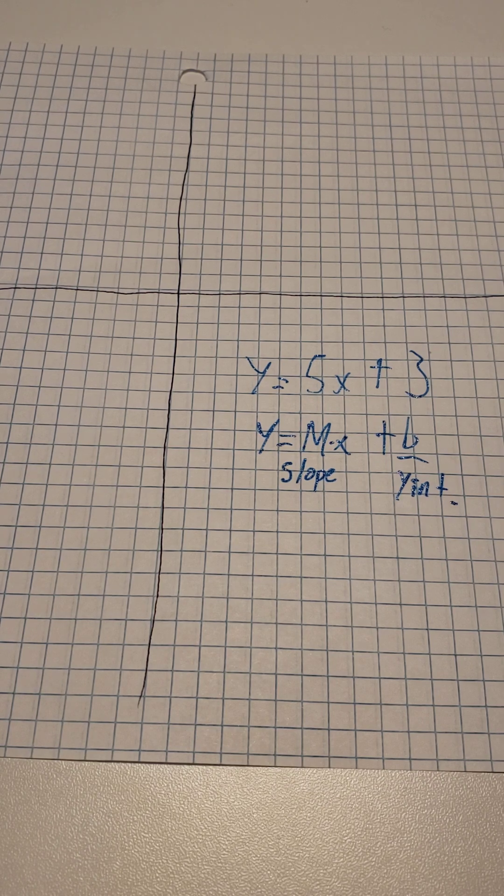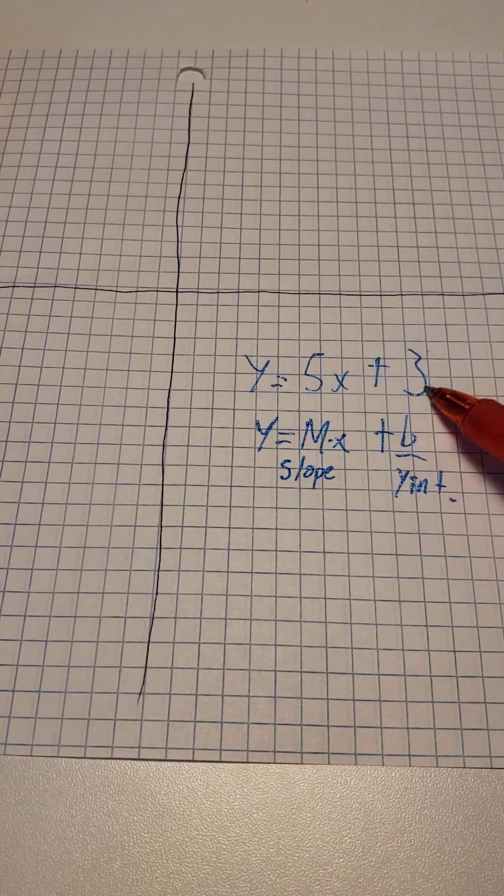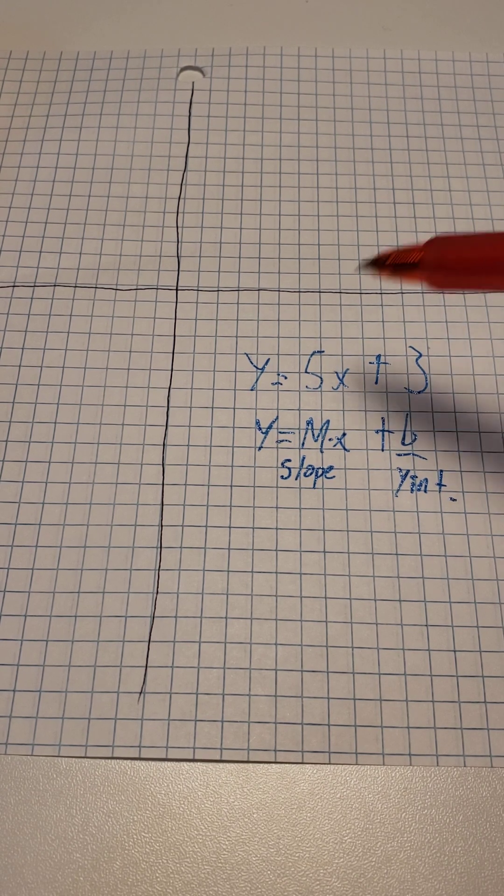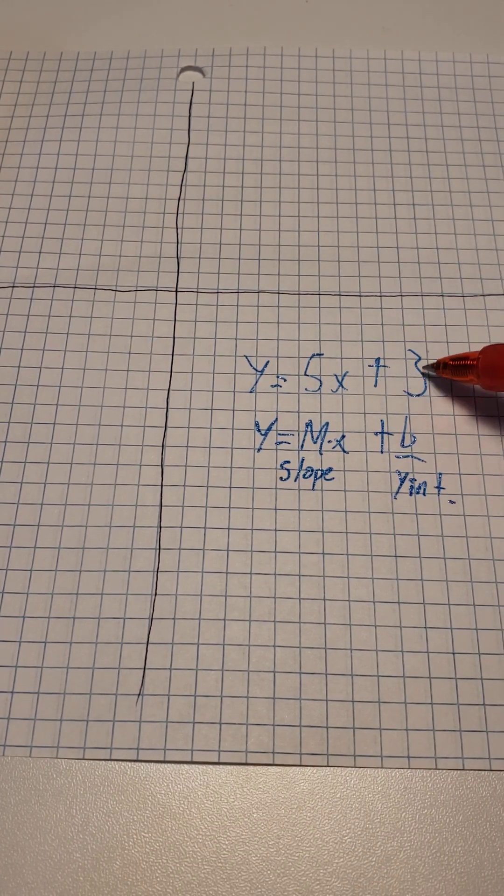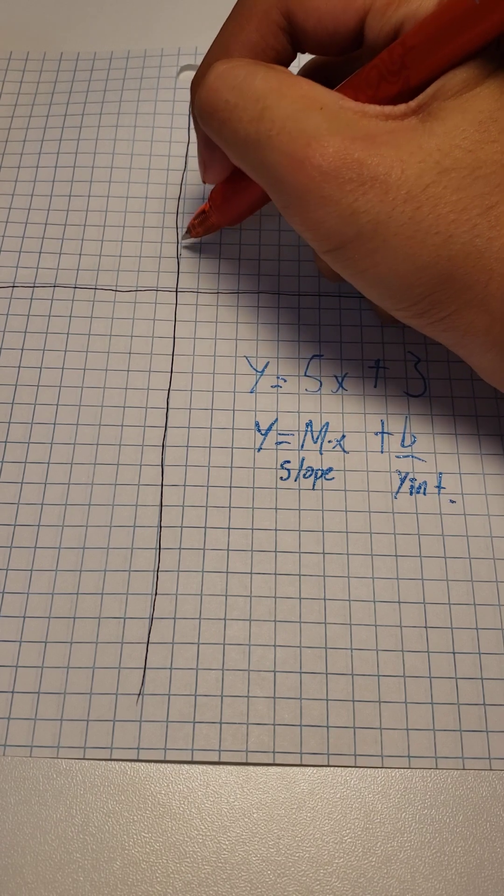So first off, let's graph this equation. Since 3 is going to be the y-intercept, or where the line crosses the y-axis, which is the vertical line, it is 3. So 1, 2, 3.